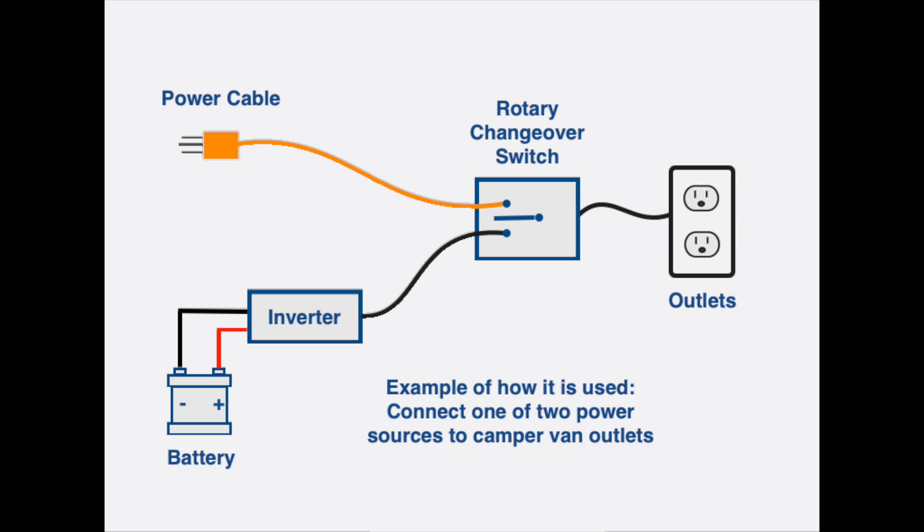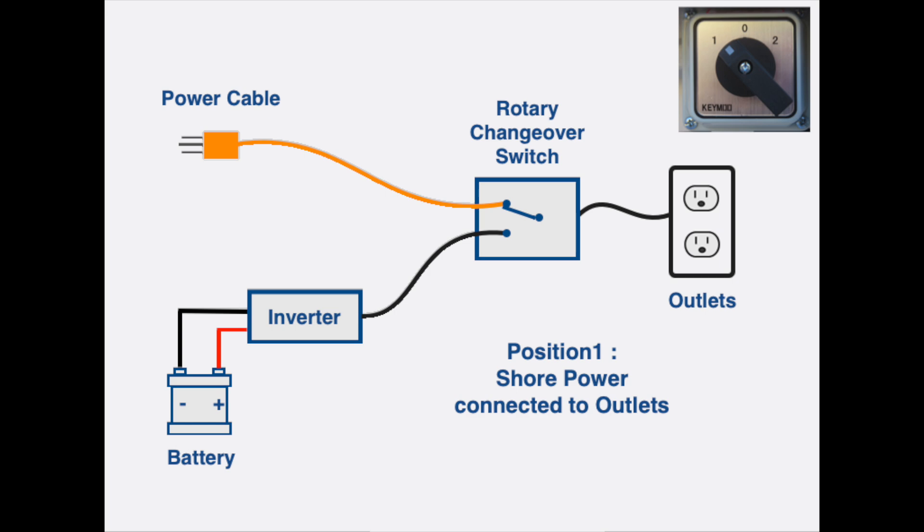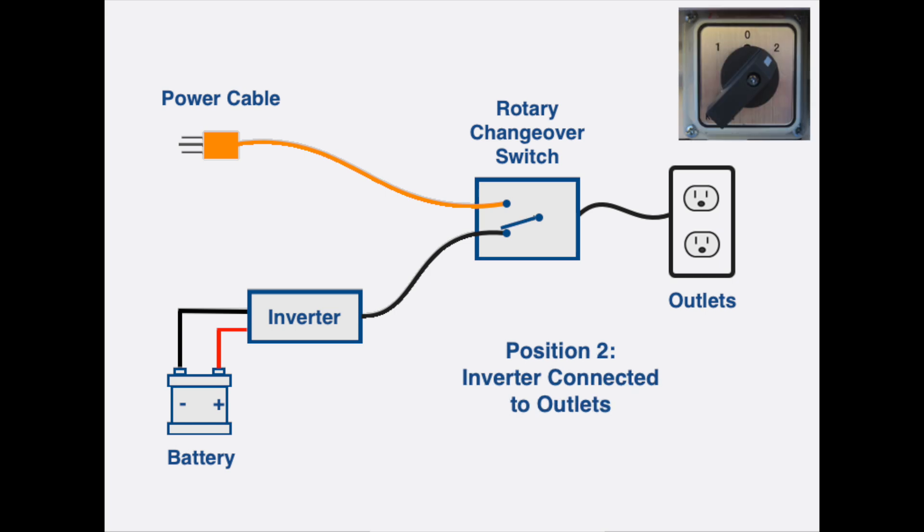In our van, a rotary changeover does this. It has three positions. In position zero, the outlets are totally disconnected. In position one, the outlets are connected to shore power. And in position two, the outlets are connected to our inverter.